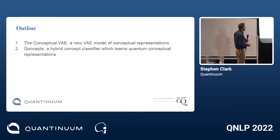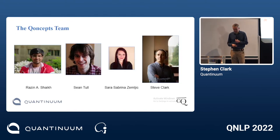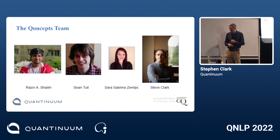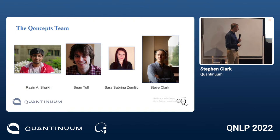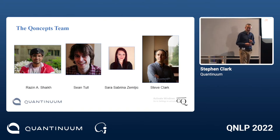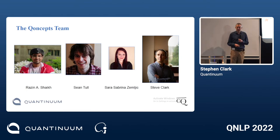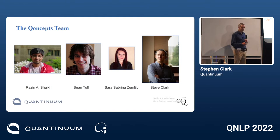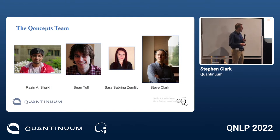Before getting into all that, let me introduce the team. Razine has written most of the code and run the experiments. Sean is our resident category theorist who formalizes our models and makes sure we're doing the right thing on the quantum side. Sara helped with coding and developed the first dataset we use. I set the high-level direction and also do some experiments myself.